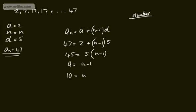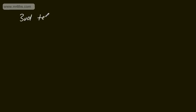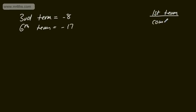We'll often use the formula not just to find a term, but to find the number of terms, or the common difference, or other information given what we already know. In later videos, we'll look at harder exam-style questions. For now, let's look at another example: the third term of an AP is −8 and the sixth term is −17. We want to find the first term, common difference, and, say, the 100th term.